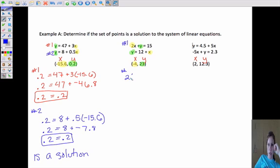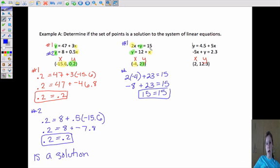So we'll start number 1. 2 times negative 4 plus 23, is that going to equal 15? Well, 2 times negative 4 is negative 8 plus 23 equals 15. Yep, that's going to be the case because 23 minus 8 equals 15. So 15 equals 15. So that works. So it is a point on the first line. That's good. Now, is it a point on the second line?